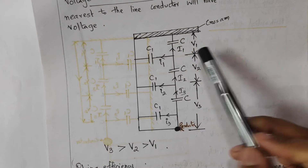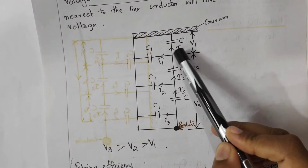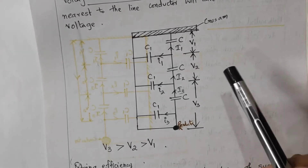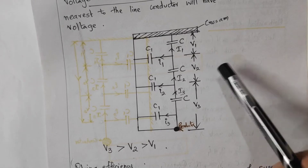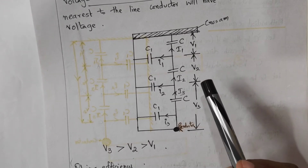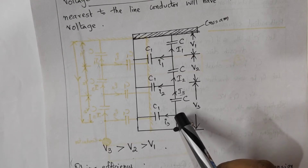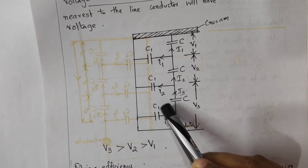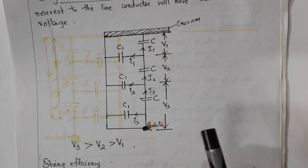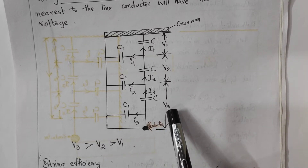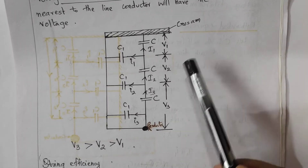In actual practice, the voltage across each mutual capacitance C will not be V by 3. The voltages will be different: V1, V2, and V3, and the total voltage of the string will be V1 plus V2 plus V3. The charging current will also be different through each mutual capacitance. The disc nearest to the line conductor will have the maximum voltage, so V3 is the maximum voltage, which is greater than V1.